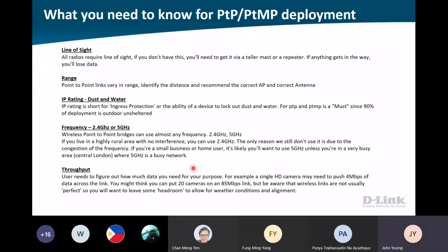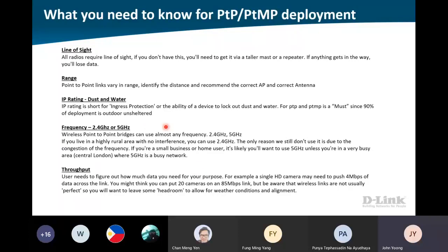Next will be the range - you need to see what's the range so you can recommend the correct AP with the correct antenna. Next, of course, we are talking about P2P outdoor AP, so we need the AP IP rating - those IP66, IP67, those kinds of things. Then we have the frequency - 2.4 or 5GHz. Normally customers will ask which one is better. For the first proposal, I always use 5GHz, because 5GHz will give them higher throughput, but the distance is shorter.